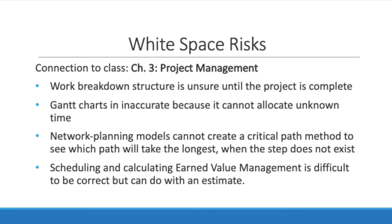This connects to Chapter 3, project management. You can't do a work breakdown structure because it is unsure until the project is complete — you are uncertain of these steps, which is why you put a white space in them. Gantt charts are very inaccurate because they can't allocate the unknown time. In network planning models, you usually want to create the critical path method, which determines which path will take the longest and is most important for slack time. With a white space issue, you risk not knowing which path is the critical path, as that step simply does not exist.